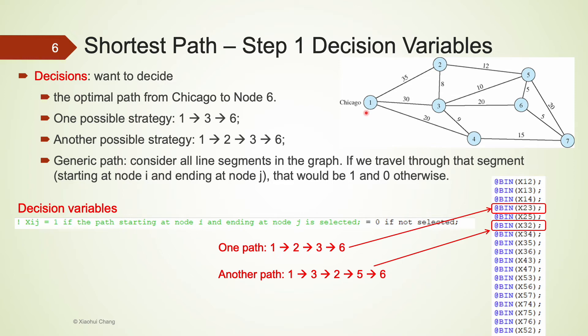Similarly, we should not include any line segments that leave from node 6. Node 6 is the final destination. The optimum path should end at node 6. If a path leaves from 6, that means we would have to visit 6 twice. That's definitely not efficient.